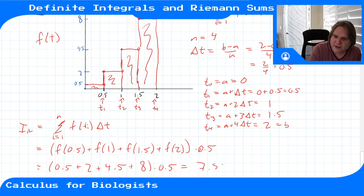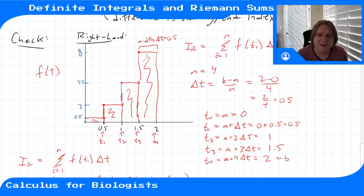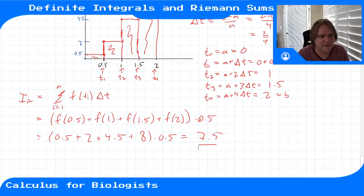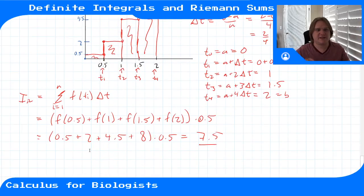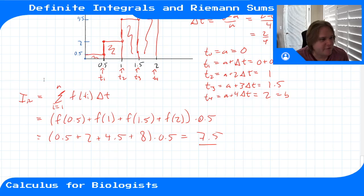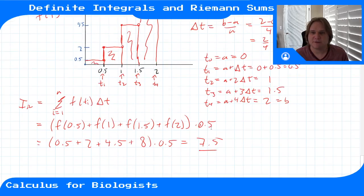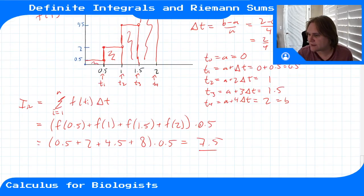Putting that into a calculator gives 7.5, which is the same area as when we computed it by adding up each rectangle individually. That makes sense because distributing the 0.5 gives the same formula as before. This confirms the right formula for right-hand Riemann sums.